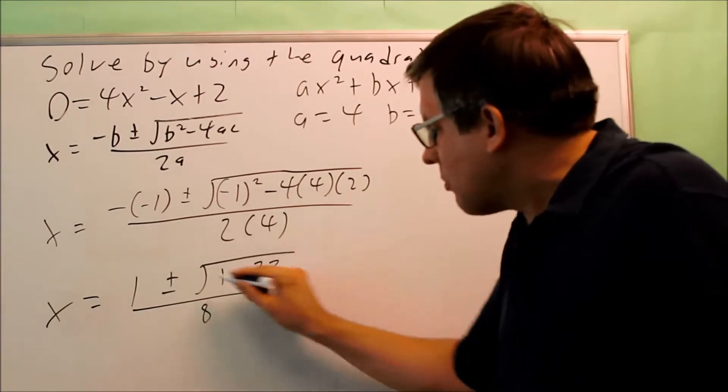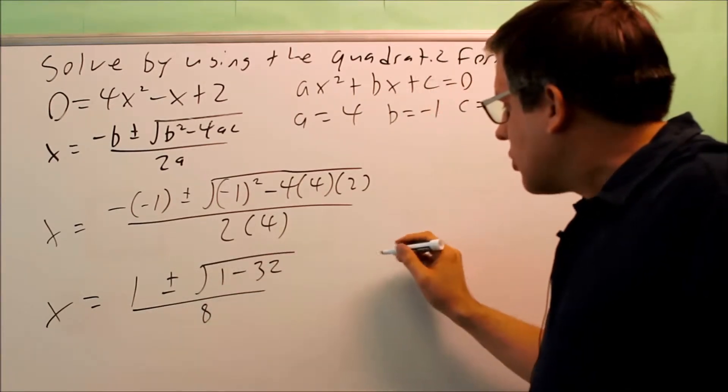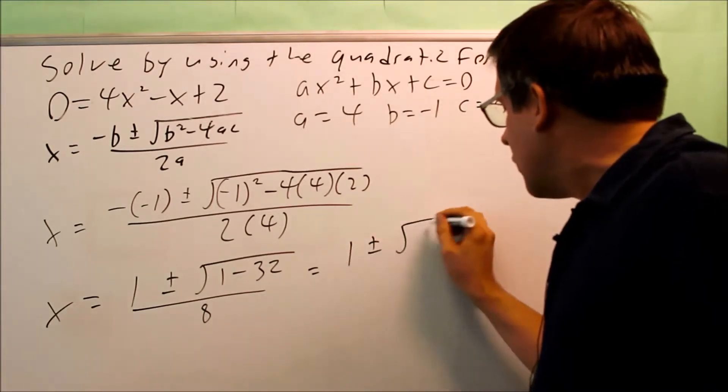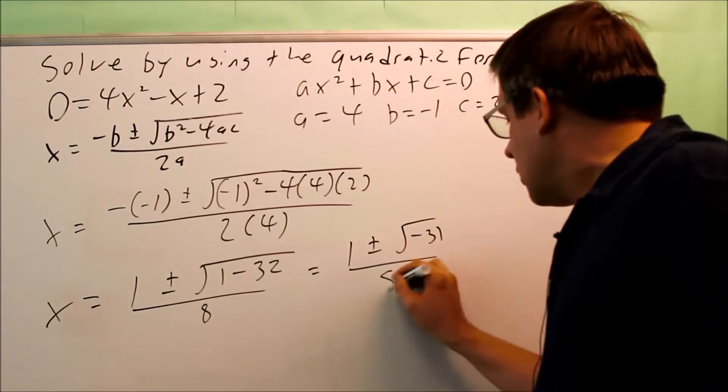So what I need to do is simplify the inside. This is going to give 1 plus or minus the square root of negative 31 over 8.